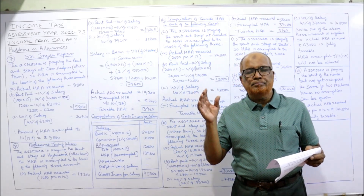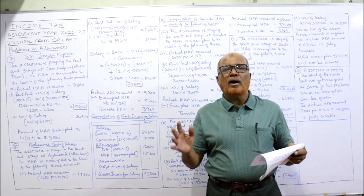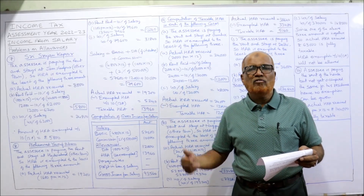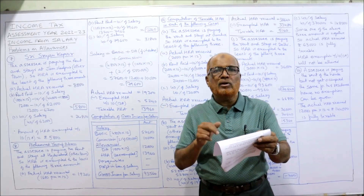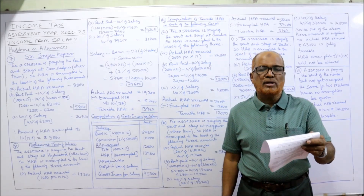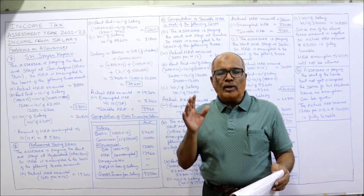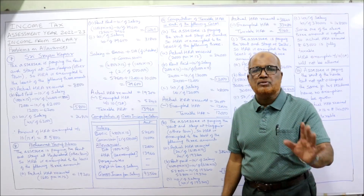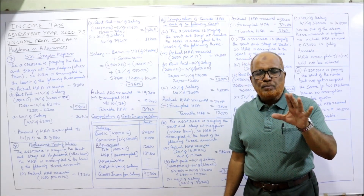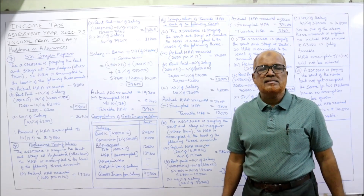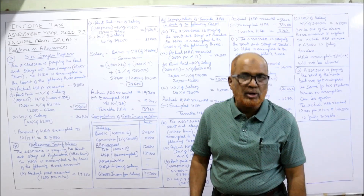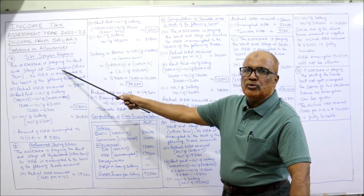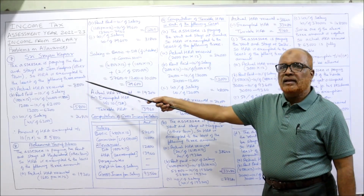For computing the HRA exemption, we don't require the payment made for electricity — that is a payment made for services received. Determine the amount of HRA exemption under Section 10(13A). In this problem we have to compute how much HRA is exempted under Section 10(13A). First, we check whether the employee is paying rent — yes, he is paying rent and stays at Jamshedpur, which is an 'other town' at 40%. So HRA is exempted to the least of the following three amounts.